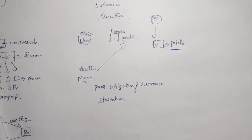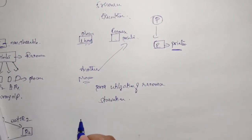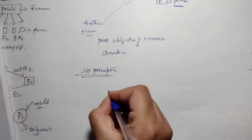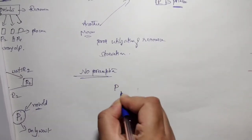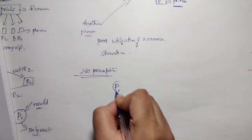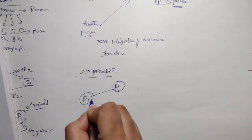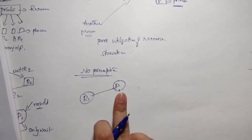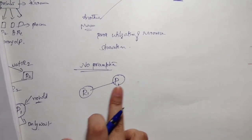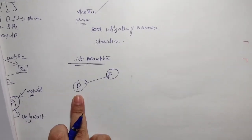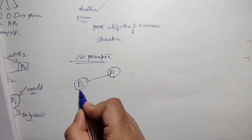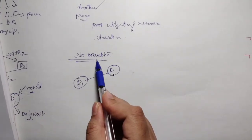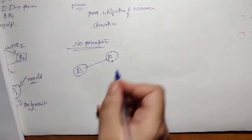The next concept is no preemption. For example, P1 contains resource R1. During the execution of a process, it cannot release the resource. Only after completion does the process release the resource — this is called no preemption. How can we eliminate this problem to avoid deadlock?